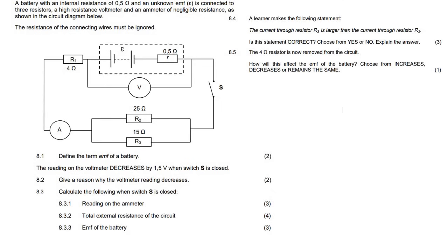Welcome to this question. Here we have a circuit where they've told us there's an internal resistor of 0.5, an unknown EMF, and everything they've said is already shown on the diagram.